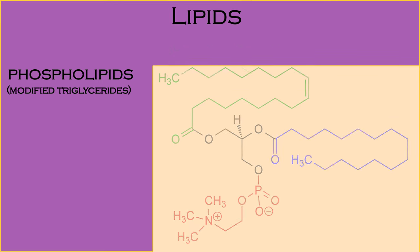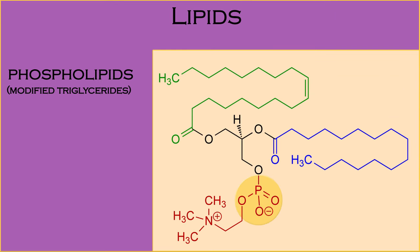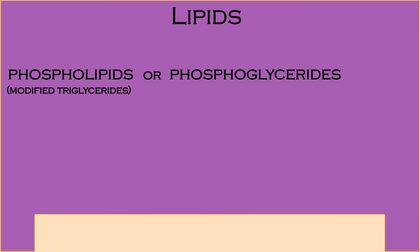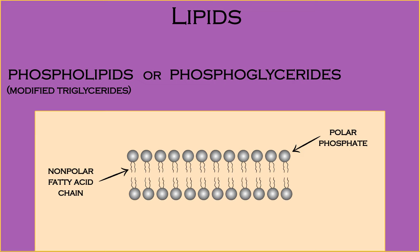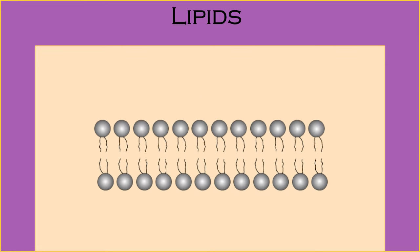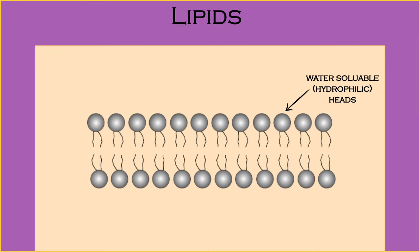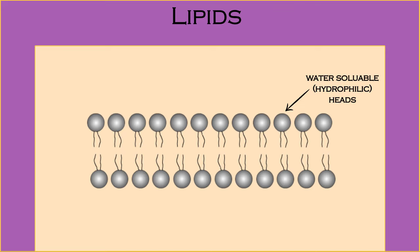Phospholipids are modified triglycerides, where a phosphate group replaces one of the fatty acid chains. Phospholipids, or phosphoglycerides, have a nonpolar fatty acid chain portion and a phosphate, polar portion. Two layers of phospholipids are the chief component of all cell membranes. In a cell membrane, the two layers self-assemble so that their water-soluble heads, or hydrophilic heads, form the surface and interior of the membrane, and the water-insoluble tails, or hydrophobic tails, face each other.